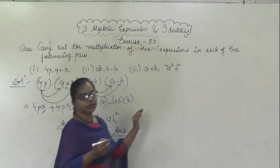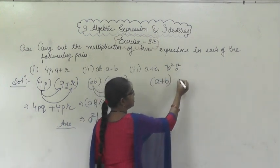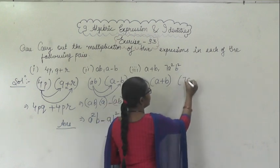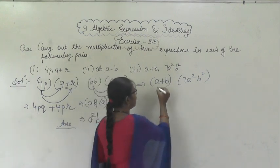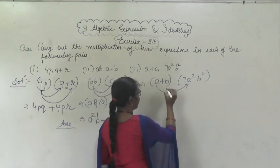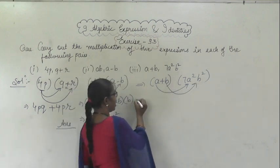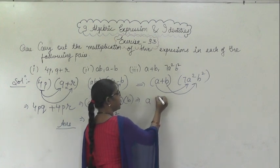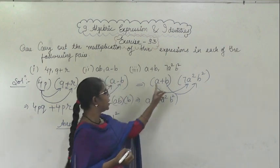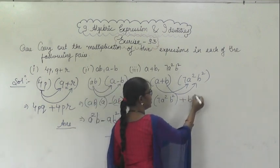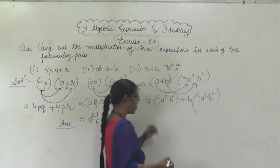The third question: (a + b) multiplied by 7a²b². First, a will be multiplied with the whole term, then after addition, b will be multiplied with the whole term. So we write: a into 7a²b² plus b into 7a²b².